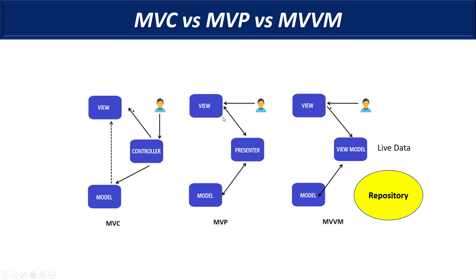To really get good at these, I think you need to make at least three to four applications using each of them. Thanks for watching guys — these are the three main architectures I wanted to talk about, and there are two more which I'll cover in a later part. I'll also be making a live demo project of a Django app where I show the MVT or MVC architecture pattern working in a real-world project, which will give you a much better idea than these presentation slides. Thanks for watching, see you in the next video!